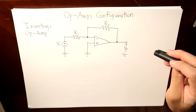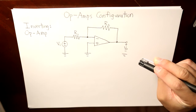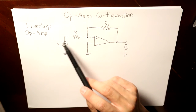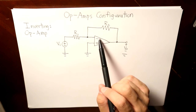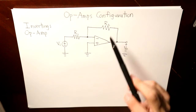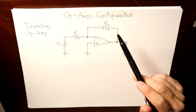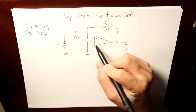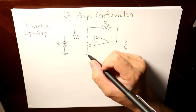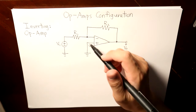The op amp has two configurations. The first configuration is the inverting op amp. The inverting op amp consists of a voltage source connected to the negative input terminal, with resistors labeled R1 and R2. At the positive input terminal, the voltage is zero because the ground is connected there, so there is zero potential and no current.